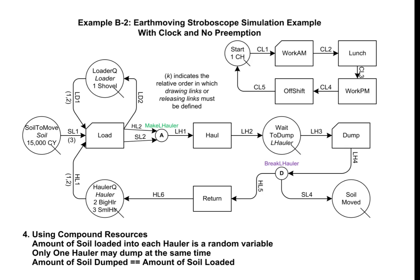When the compound resource L hauler reaches the disassembler, the hauler will then be given to an instance of activity return and the soil will flow through link SL4 into the queue soil moved.